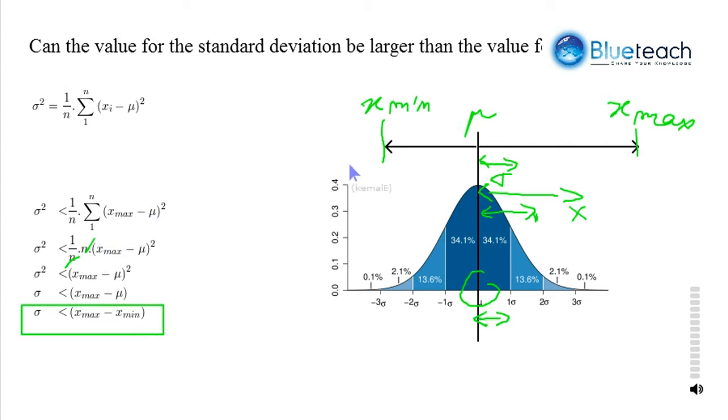And it would work the same if x min was here. And so, if we had that distance larger than that distance, then we would have put here, not x max minus mu, but mu minus x min, and we would get the same result. So, that's it for today.